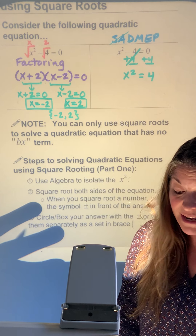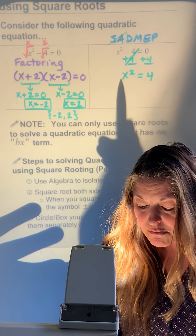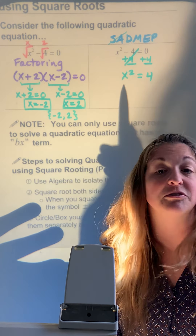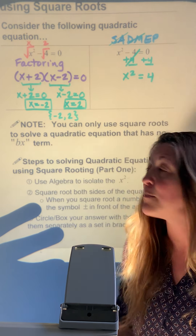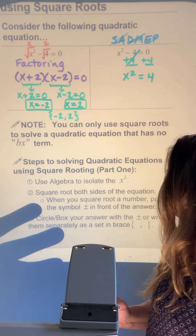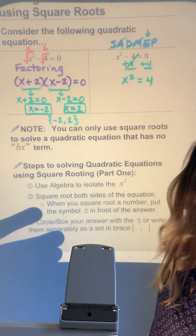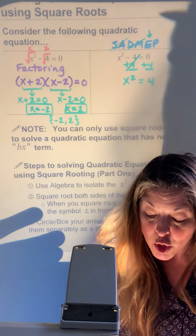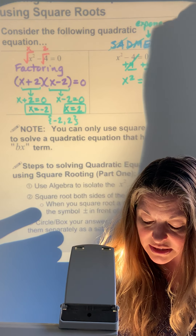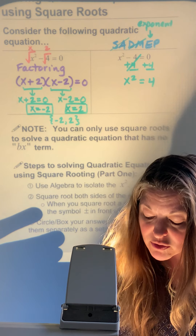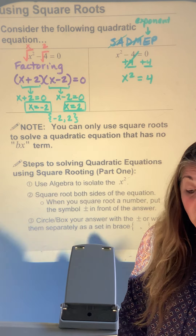I'm not done yet because x is not alone — it still has that exponent of 2. There's nothing being multiplied or divided to x, so I cross out the DM part of SADMEP. Now I'm ready to tackle the E for exponent.